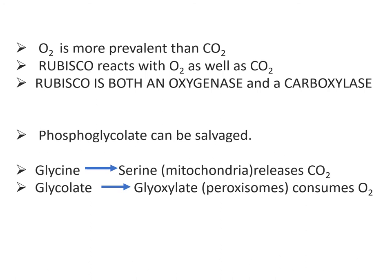Photorespiration does not appear to be beneficial for plants since it is essentially the reverse of photosynthesis — oxygen is consumed and carbon dioxide is released without any gain of ATP. However, peroxisomes do play an important role by allowing most of the carbon in glycolate to be recovered and utilized.